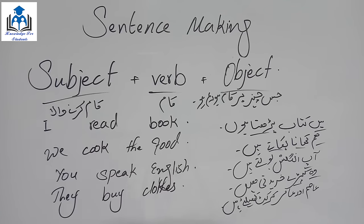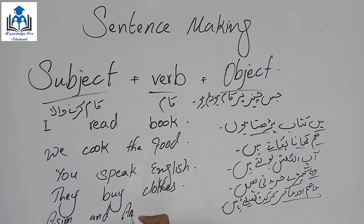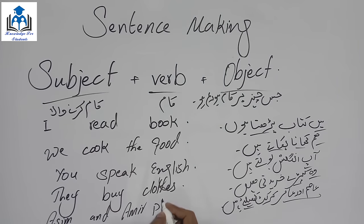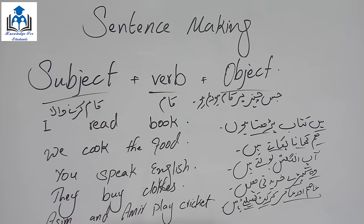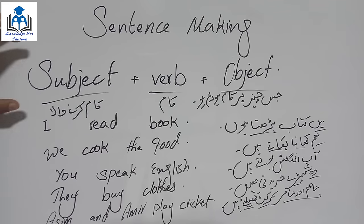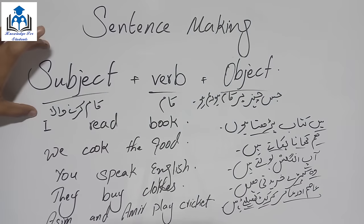Last statement: 'آسیم اور آمیر cricket کھیلتے ہیں' (Asim and Amir play cricket). Who does the action? Asim and Amir — they are the subject. What do they do? کھیلتے — 'play'. What do they play? Cricket. So: Asim and Amir play cricket. Guys, this structure is very important. If you understand this, you can make thousands of sentences on your own. It's not difficult, it's very simple and very easy.